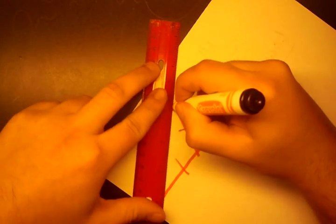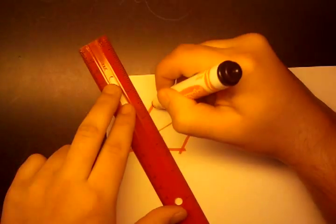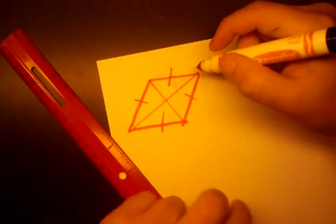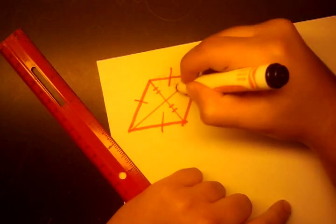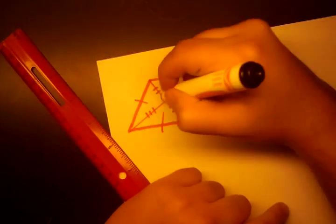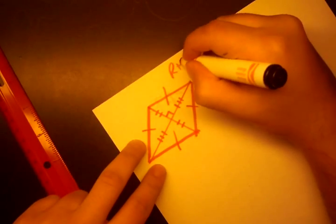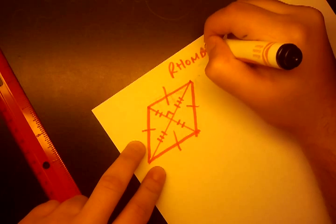Other properties of a rhombus are that when we draw the diagonals of a rhombus, the diagonals bisect each other. So these are the same length, and these are the same length. Also, they intersect in right angles. That is our rhombus.